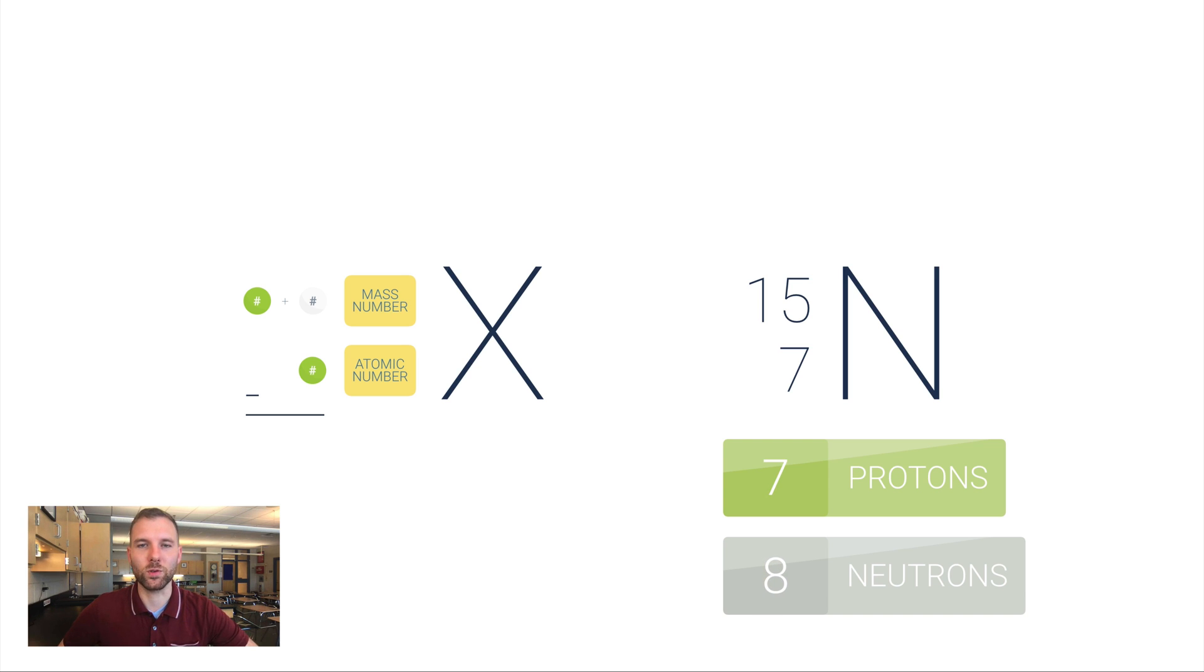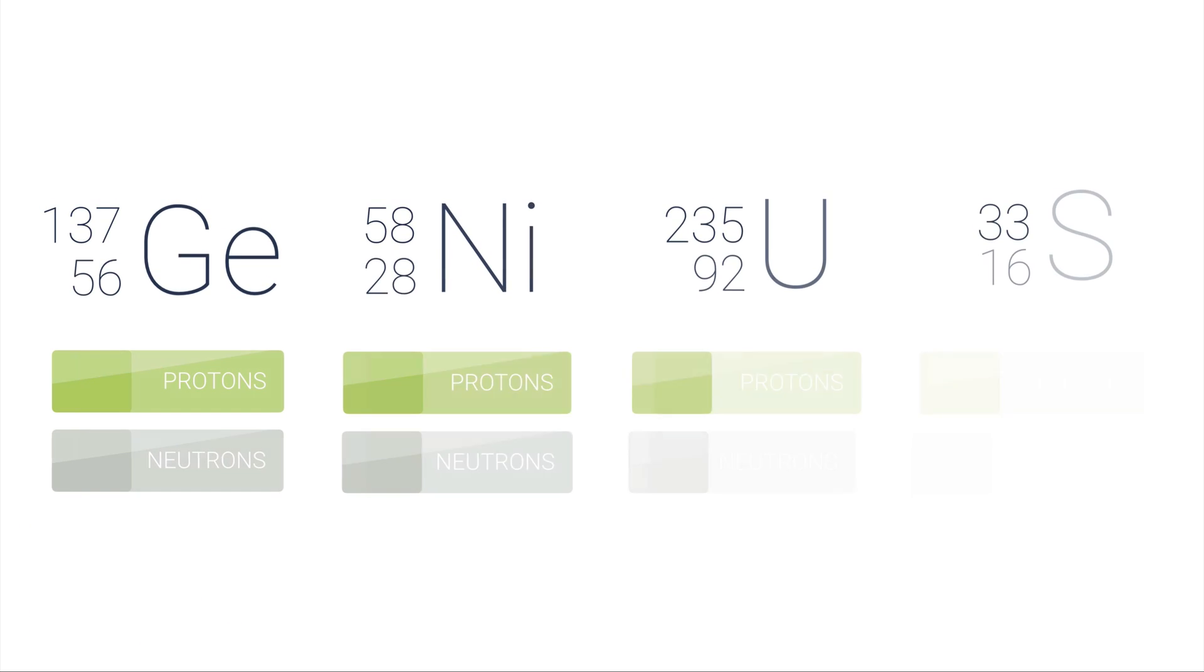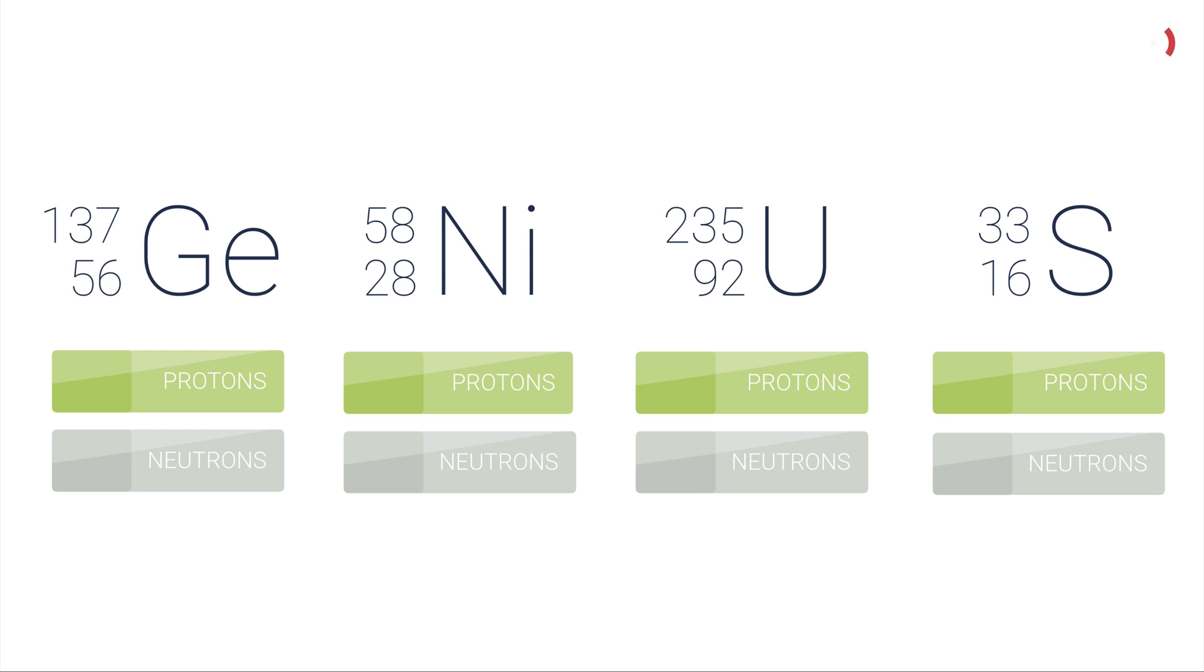So try this with these four examples. Pause the video now and calculate for yourself how many protons and neutrons are in each of these four isotopes. Okay, here are the answers. The proton amount should be the easiest thing to figure out here because it's right there for you. The lower left-hand number is the atomic number, which is the number of protons.